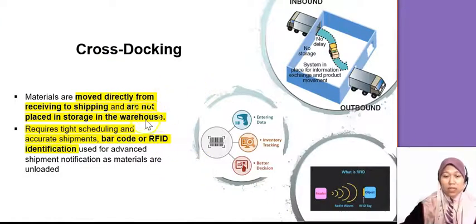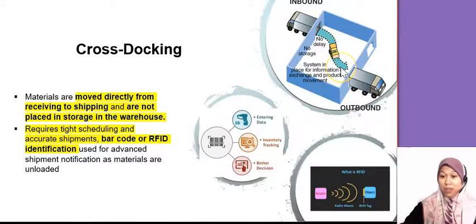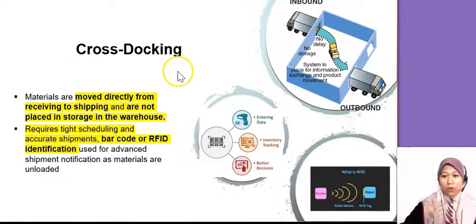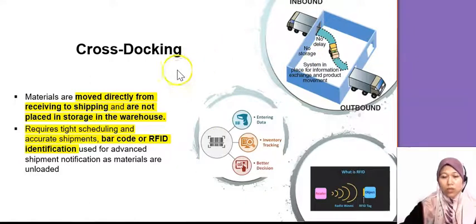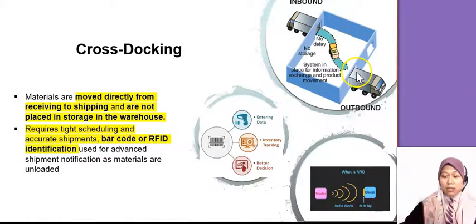Another one is cross-docking. Cross-docking is usually directly from receiving — you don't store it too long and then it goes for outbound. Usually this is for shipping companies like FedEx and DHL. For example, from the FedEx warehouse in Dubai, all flights from the US go to Dubai, and then they distribute the parcels based on the region the next plane is going to. If the next plane is going to Japan, all parcels to Japan and Korea go in one plane, and for China maybe another plane. For cross-docking, it's very fast movement, so you need a very established system using barcode or RFID tags so you know what items are received and what is going out.